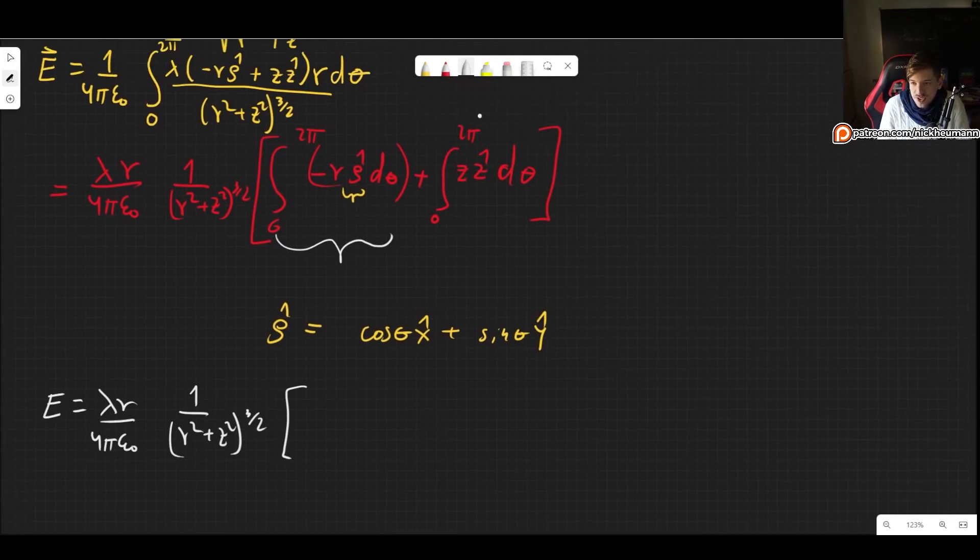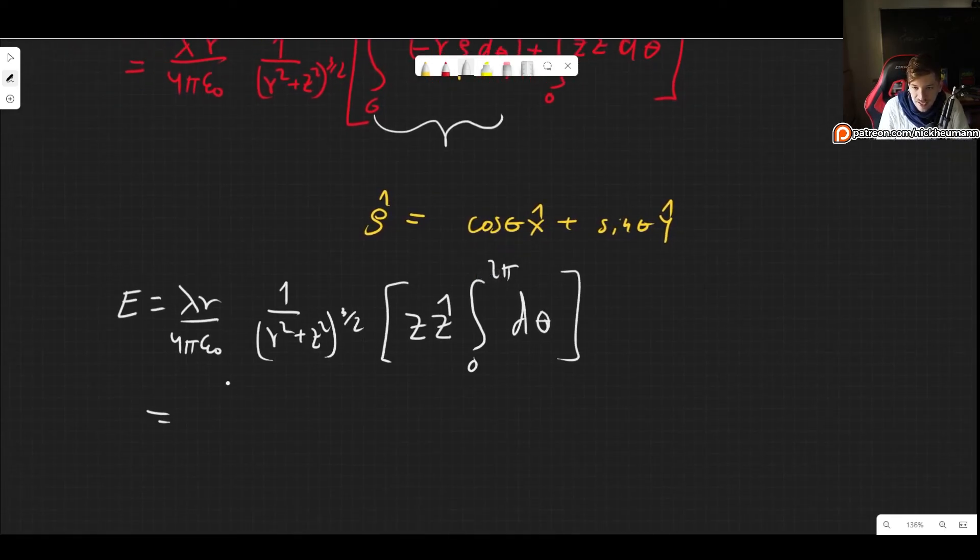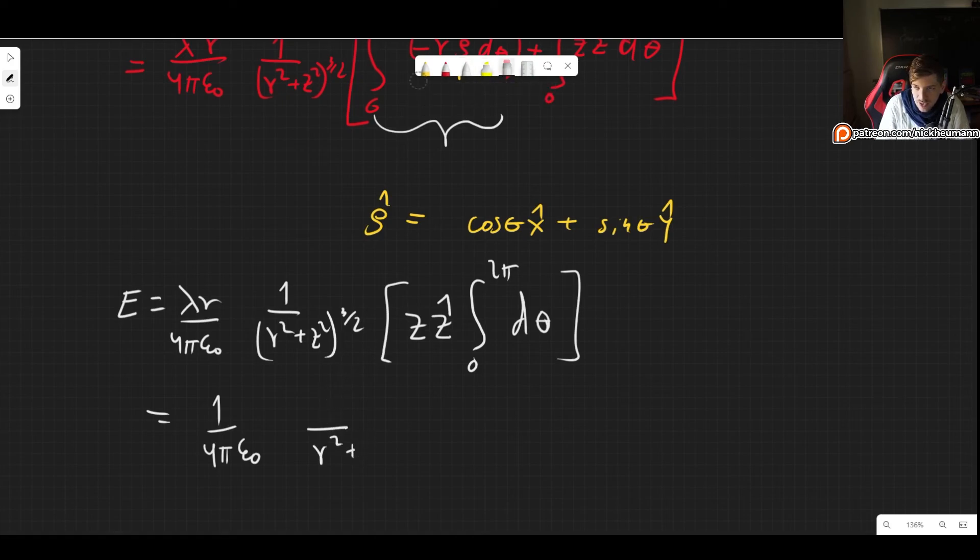We only have the other integral, which is easy because z z-hat we can take out, leaving the integral between 0 and 2π of just dθ. This is simply 2π. So we can pull out the 2π and write things nicer. This is 1 over 4πε₀ times 2πrλz divided by (r² + z²)^(3/2), all in the z-hat direction. This is the electric field for this particular case where we have this circular loop.